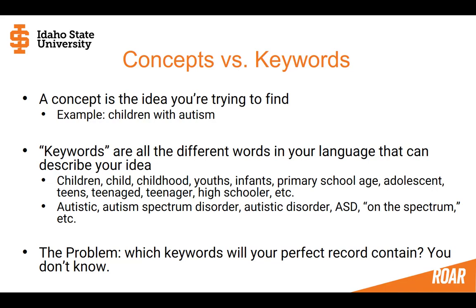We could say children with autism, a child with autism, or childhood autism. There are so many different kinds of children: youths, infants, primary school age, adolescent, teens, teenage, teenager, or high schooler. You have to think about journal articles out there that are describing children more specifically than just using the word 'children,' and think about how to capture those in your search by searching on the words they might contain.